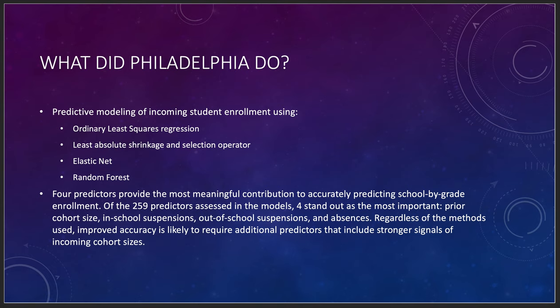At one institution I worked at, we used a test similar to the GRE/SAT/ACT called an MCQ score, measuring language proficiency, math, science, and other things. We looked at whether students with a given MCQ score would complete the class and how their grades progressed. We found that students scoring between 70 and 85 would start, finish, and actually show a clear progression of learning — going from modest first test scores to nearly acing the final.